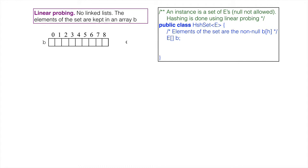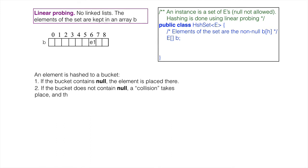As usual, an element E1 is hashed to a bucket. If the bucket contains null, E is placed there. If another element E2 hashes to an occupied bucket, a collision is said to have occurred, and E2 must be placed elsewhere.